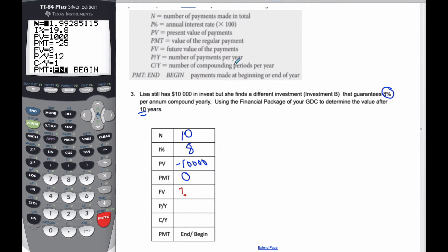And then I'm going to look at the number of payments per year. Well, I'm only going to get the compound yearly. So there's one payment coming out of the year. It's going to be compounded once a year.